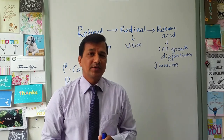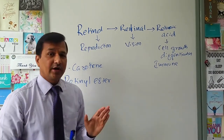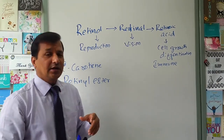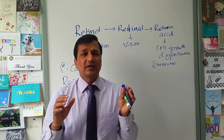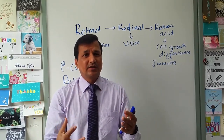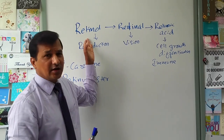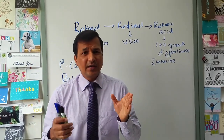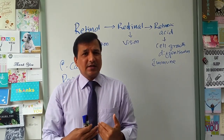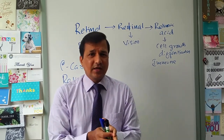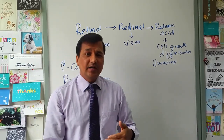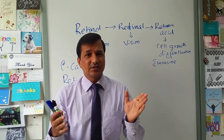In the intestine, retinol esters are broken down into retinol plus fatty acid and absorbed. Beta-carotene is absorbed via scavenger receptor class B and then cleaved into two molecules of retinaldehyde by the enzyme 15,15'-dioxygenase. Retinol inside the enterocyte is re-esterified with fatty acid to become retinol ester again. So whether from beta-carotene or retinol esters, both are ultimately converted to retinol esters in the enterocyte.